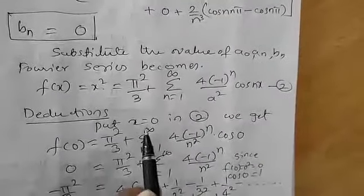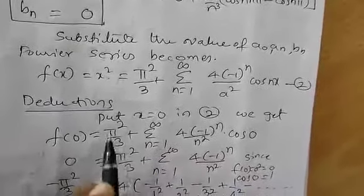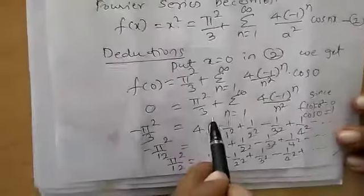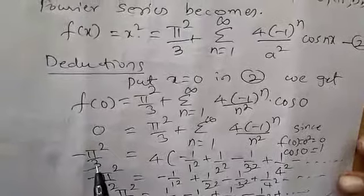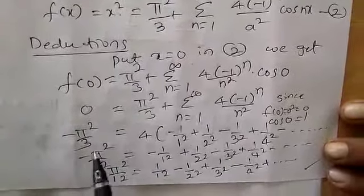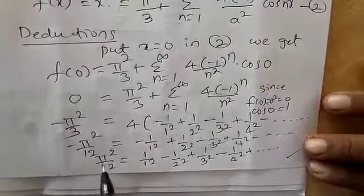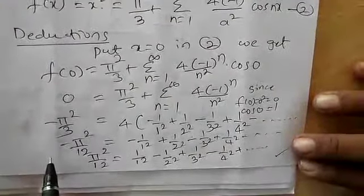For the deduction, put x = 0 in equation 2. Since f(0) = 0² = 0, we get: 0 = π²/3 + summation n=1 to infinity of 4(−1)ⁿ/n². Rearranging, shifting the π²/3 term and dividing through: π²/12 = summation of (−1)ⁿ⁺¹/n² after multiplying the equation through by −1 to change signs.